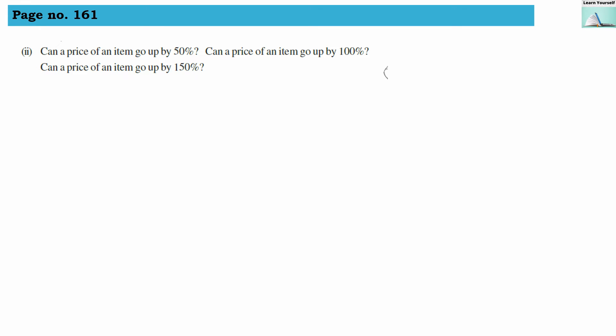Our second question — we are again denoting questions a, b, and c. Can a price of an item go up by 50%? Let us assume that the price of one pen is 2 rupees — a very small quantity so it will be easy for comparison. Let us try to understand what a 50% hike on this price would be.